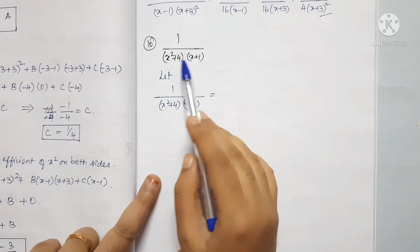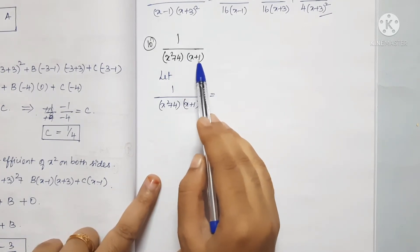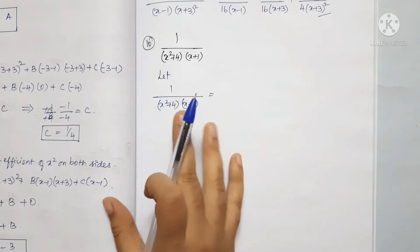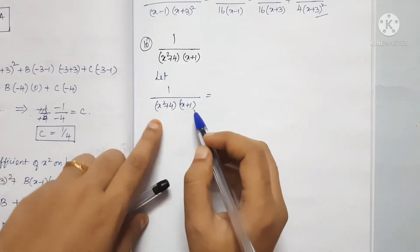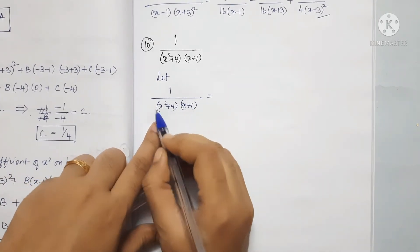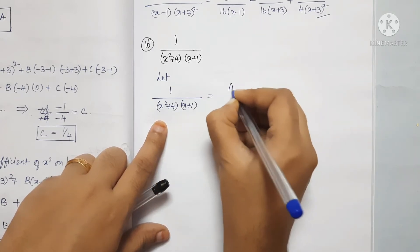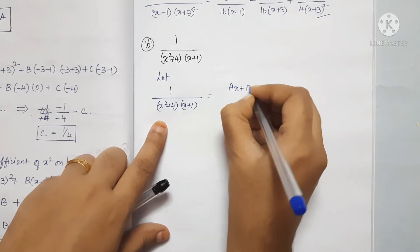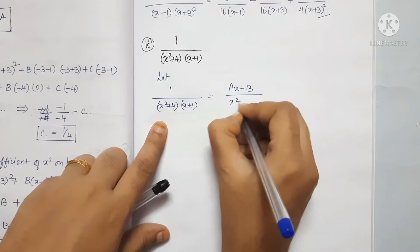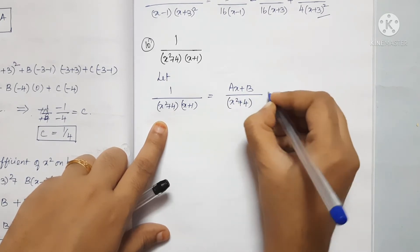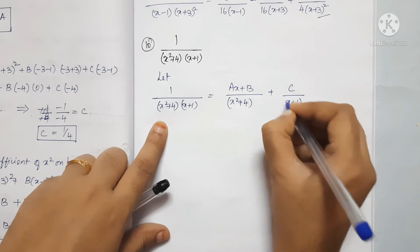The problem is: 1 divided by (x squared plus 4) into (x plus 1). We will decompose this using partial fractions. We write it as (Ax plus B) divided by (x squared plus 4), plus C divided by (x plus 1).